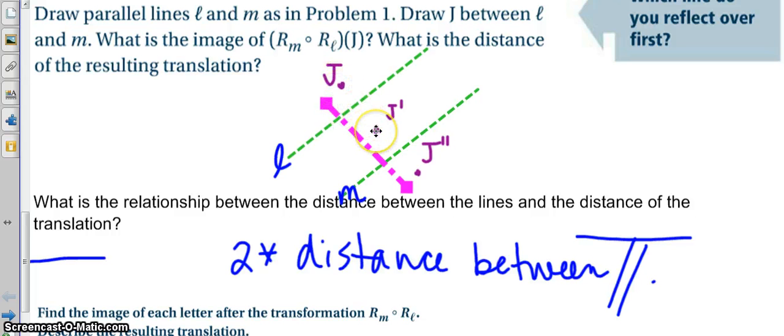So, the distance from J to J' should actually be pretty similar to the distance between the lines, and then from J' to J double prime is that same distance again, so then we get that double distance.